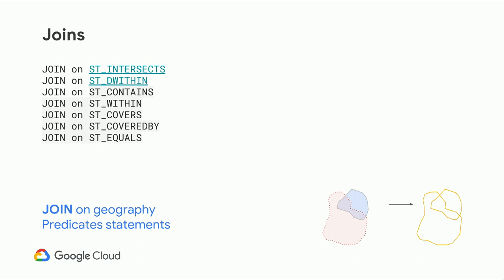Here's where the magic really happens: joins on geographic datasets. In the demos we'll talk about, we actually join on zip code geometry — not just the zip code integer. With these functions, you can actually do joins on the geography itself — find all the points that are in two datasets and join them together with any of these predicates. This is where the magic really happens.